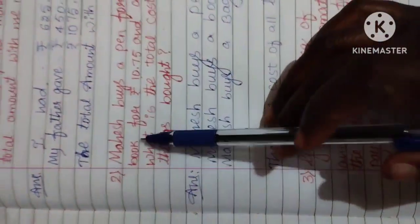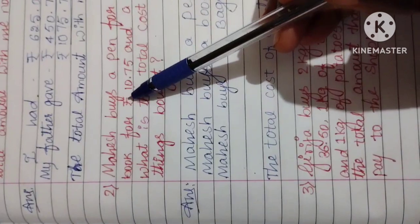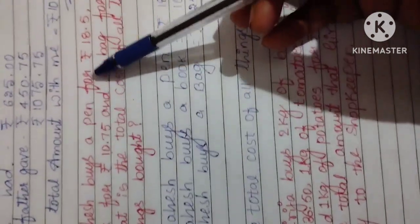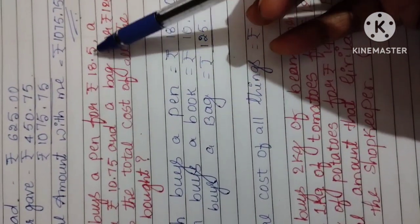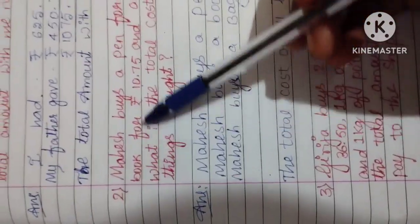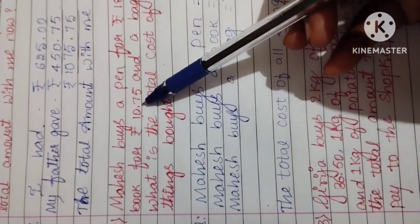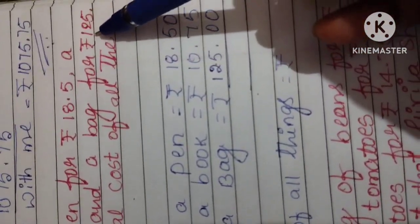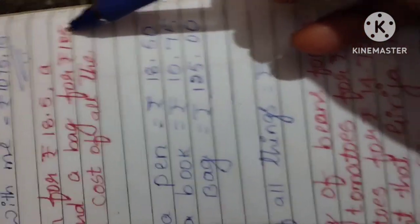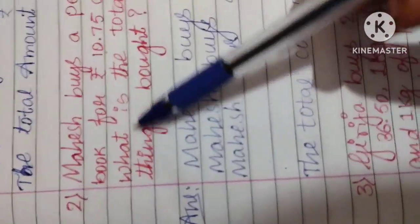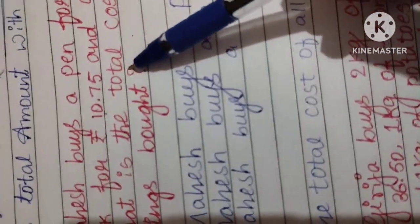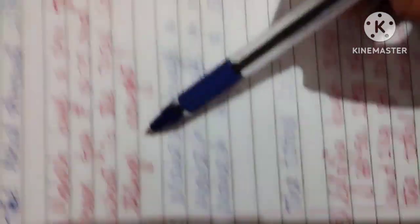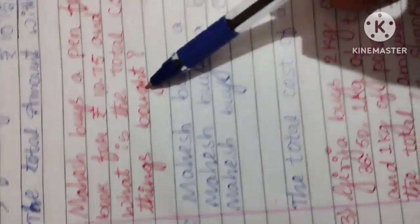Second Question: Mahesh buys a pen for Rs. 185.75, a book for Rs. 10.75, and a bag for Rs. 125. What is the total cost of all the things bought?